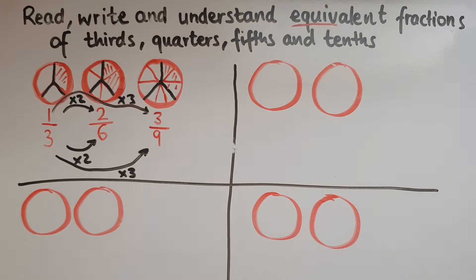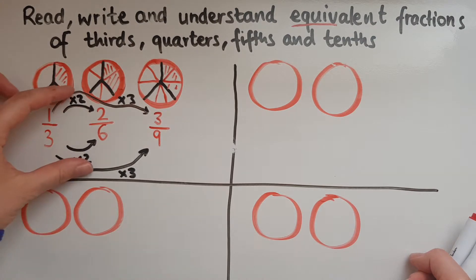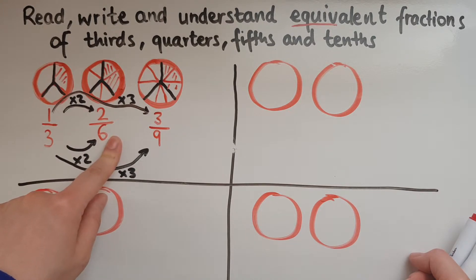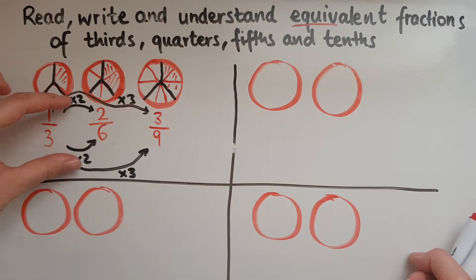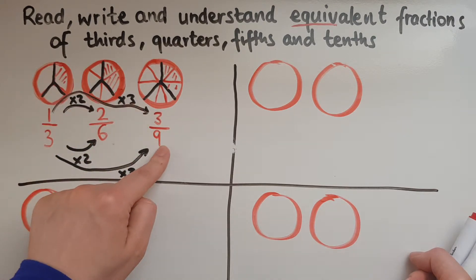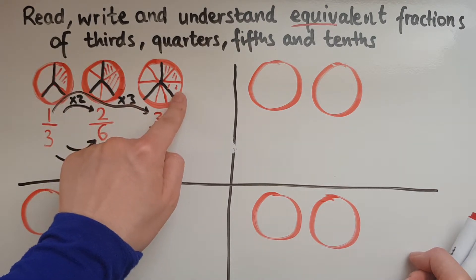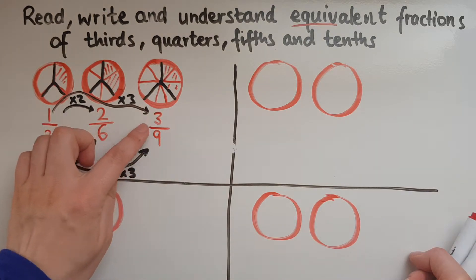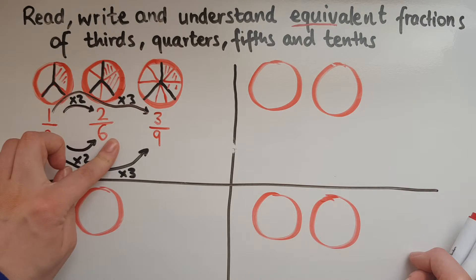So what do you notice? When we multiply the top and the bottom number by the same number, then we get an equal fraction. So one times two gives you two, three times two gives you six. So that is an equal fraction. The slice, the amount has not changed. Then again, one times three gives you three, three times three gives you nine. So that represents the same amount. This just tells us that we split the pizza into smaller slices. There are more slices, but smaller.